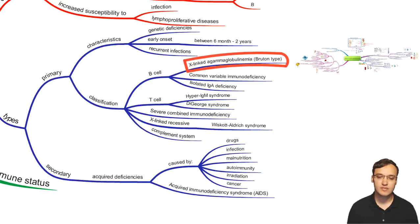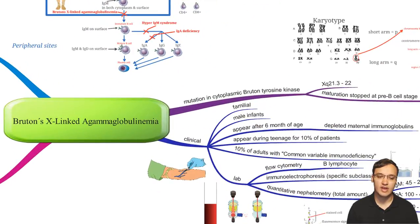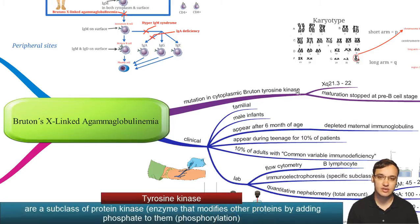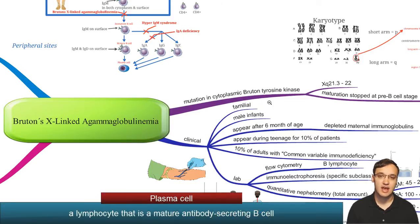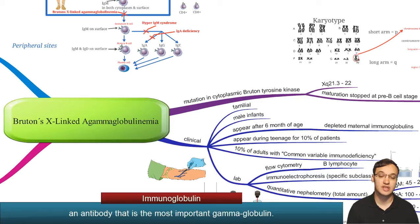This mind map gives you all the information you need to know about Bruton's X-linked agammaglobulinemia. X-linked stands for a mutation of the X chromosome. If you have a mutation in the X chromosome, then the Bruton tyrosine kinase will not work as it should. If this doesn't work, then B cell maturation will be stopped. Without B cell maturation, you don't have any plasma cells, and therefore no immunoglobulins, since plasma cells are important for producing immunoglobulins.